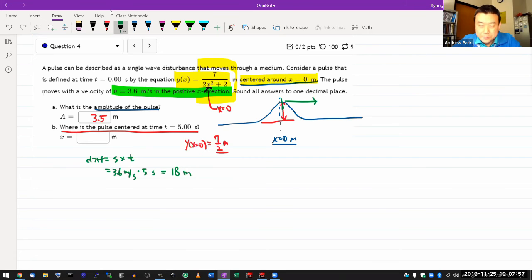Yeah, it should have moved by distance of 18 meters, so you say the pulse is centered at time t equals five seconds at x equals 18 meters.